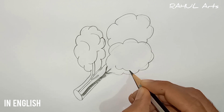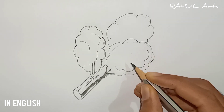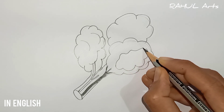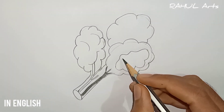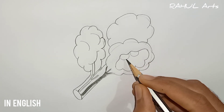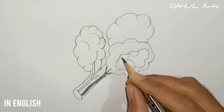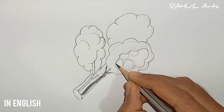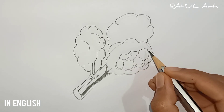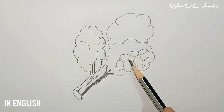After highlighting that part, draw another cloudy-like structure inside the first one. After drawing the cloudy structure, draw small circle-like structures inside the inner cloud. These represent the alveoli through which oxygen and carbon dioxide are exchanged.